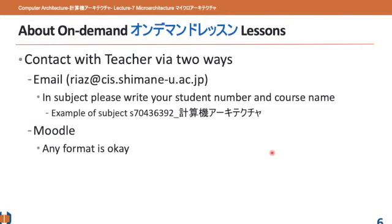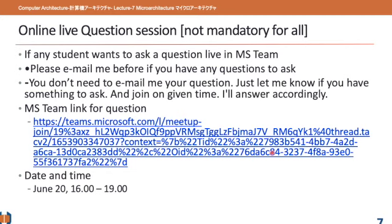The last thing is how you can contact me during the on-demand period. You can email me or message me in Moodle. For email, be careful about the subject line — the guideline is to write your student ID, underscore, then the course name. For example: your ID underscore Keisanki Architecture. I will answer your questions either via Moodle or by reply email.